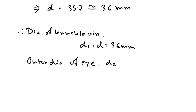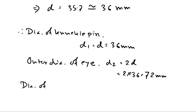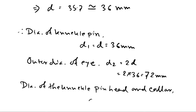Derived dimensions: D2 (diameter of eye) = 2D = 2 × 36 = 72 mm. D3 = 1.5D = 1.5 × 36 = 54 mm.